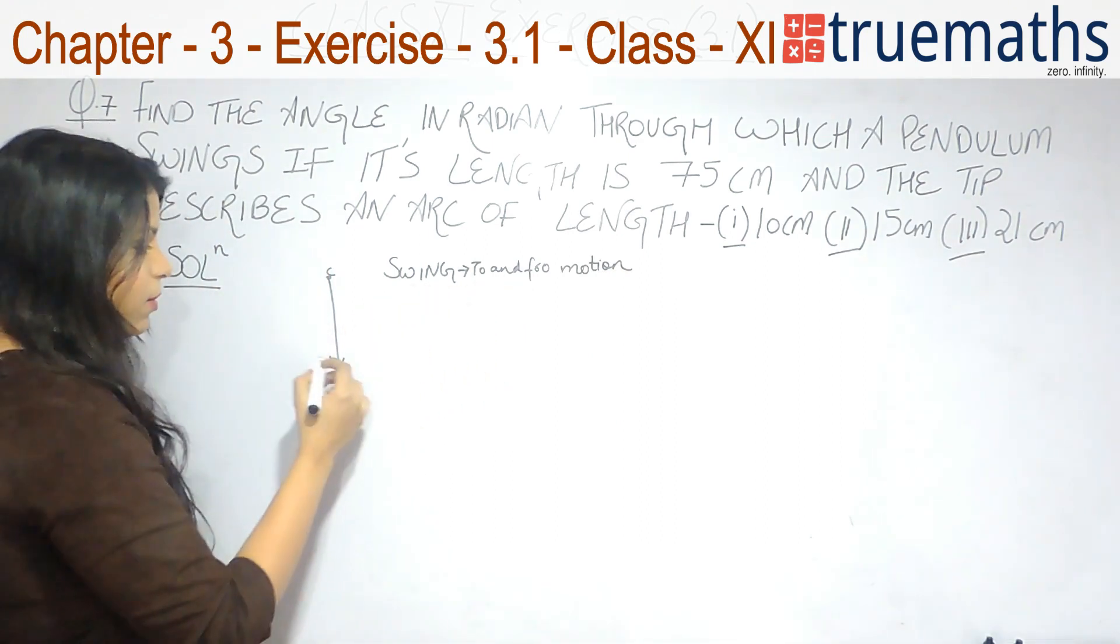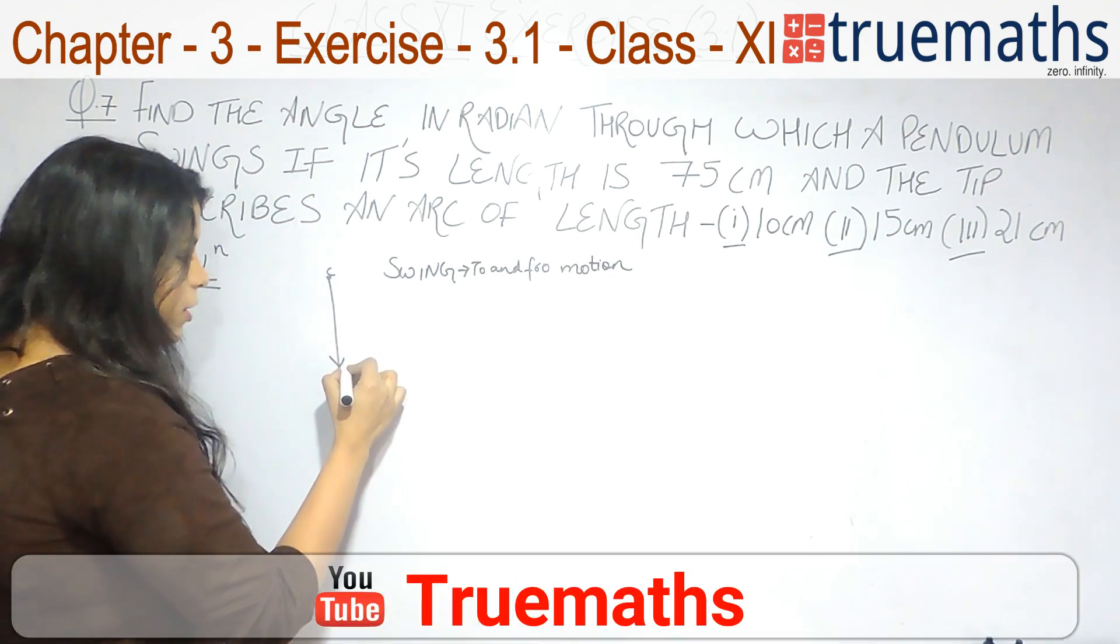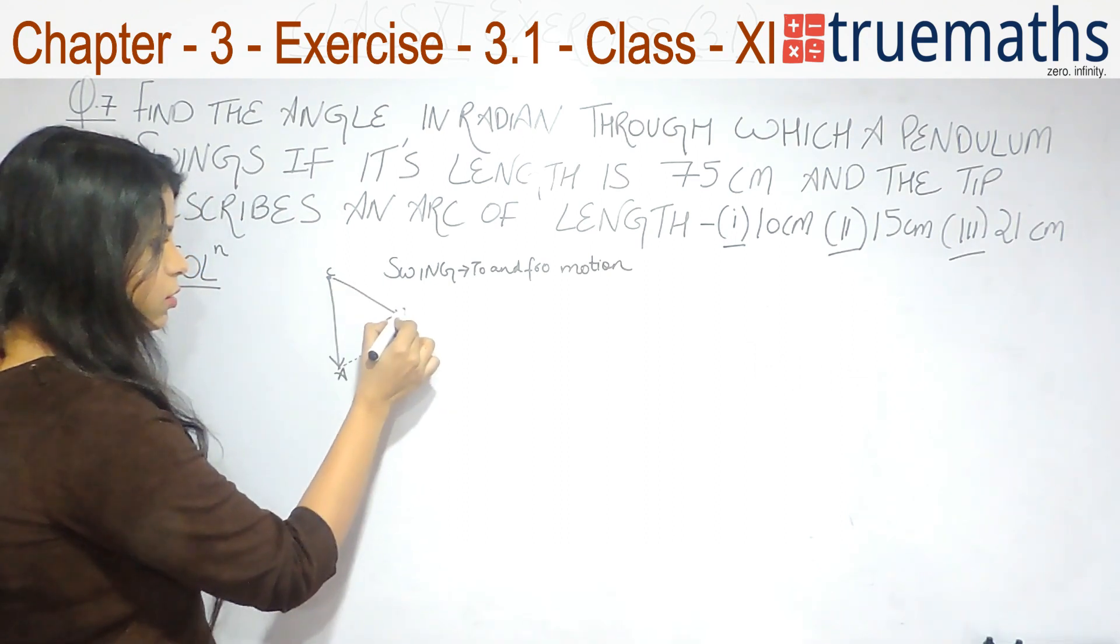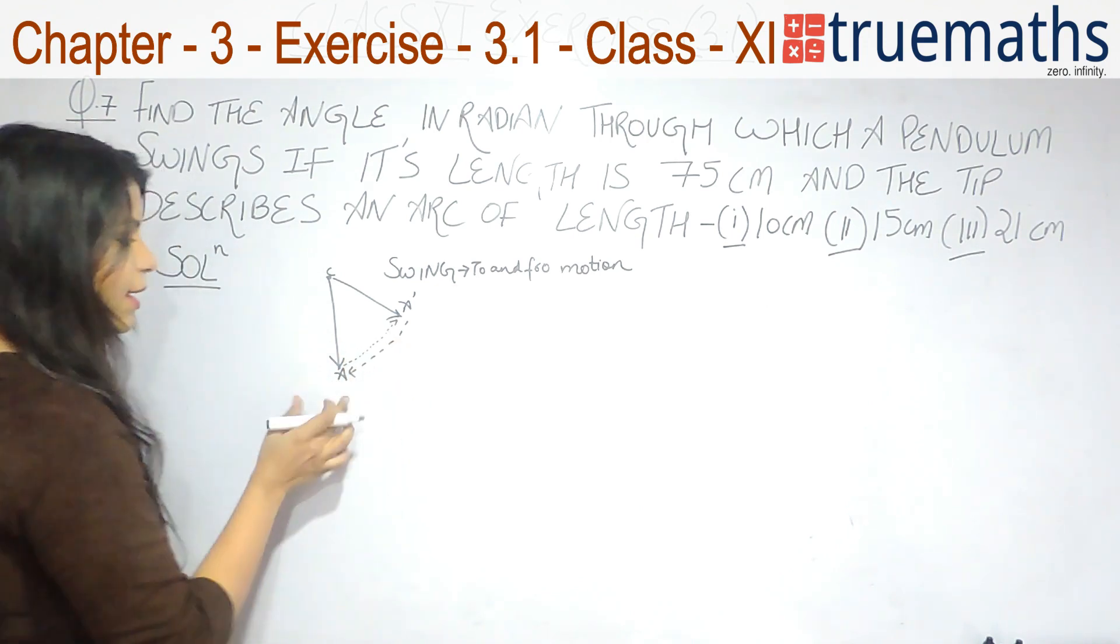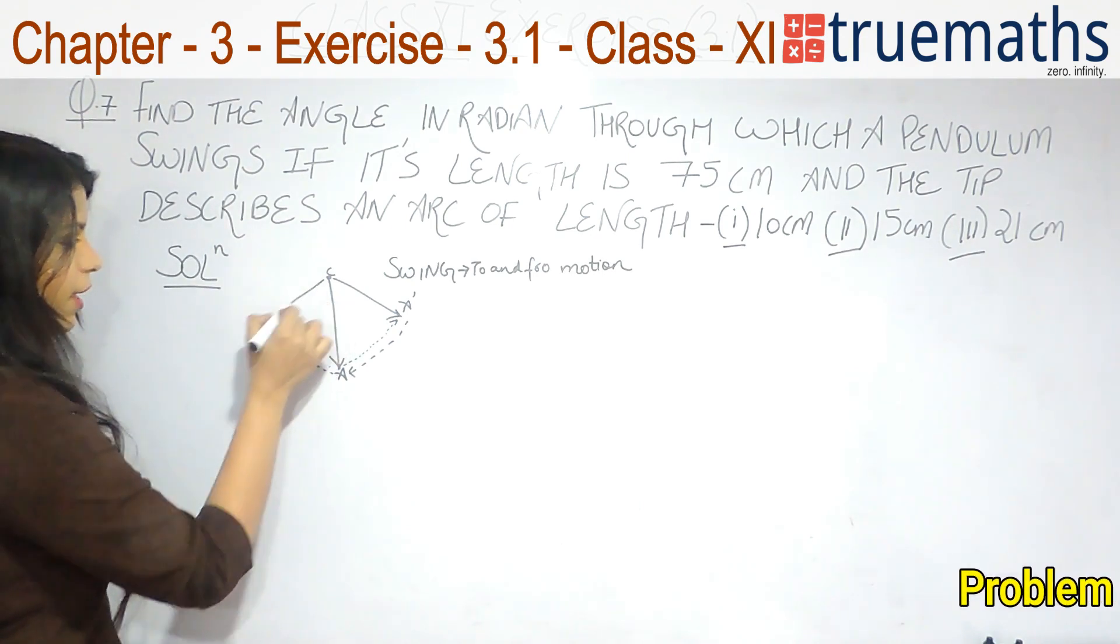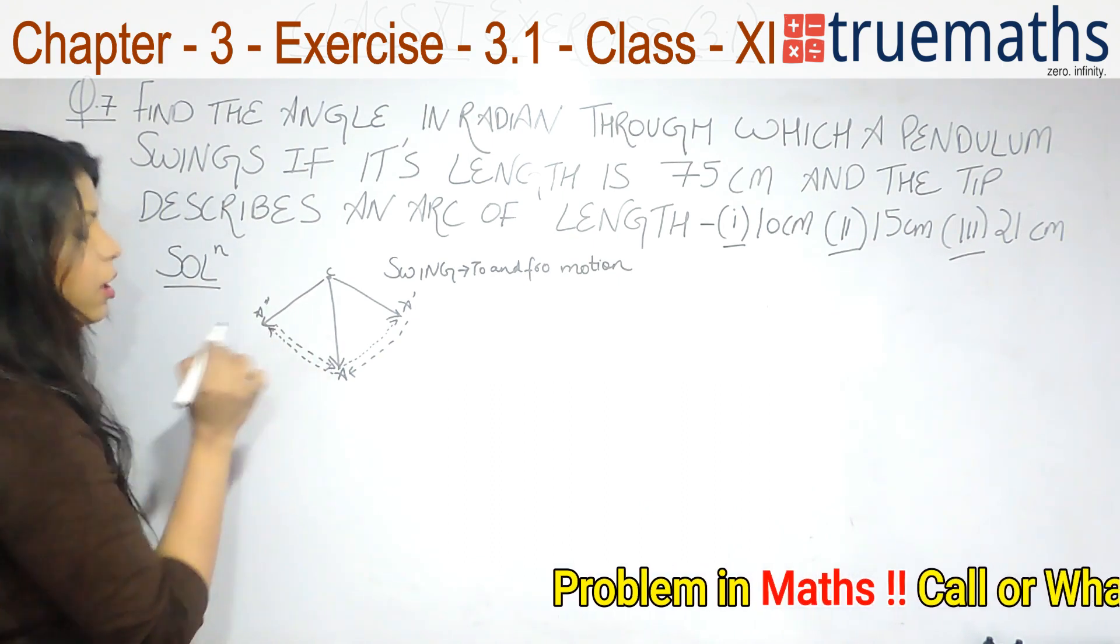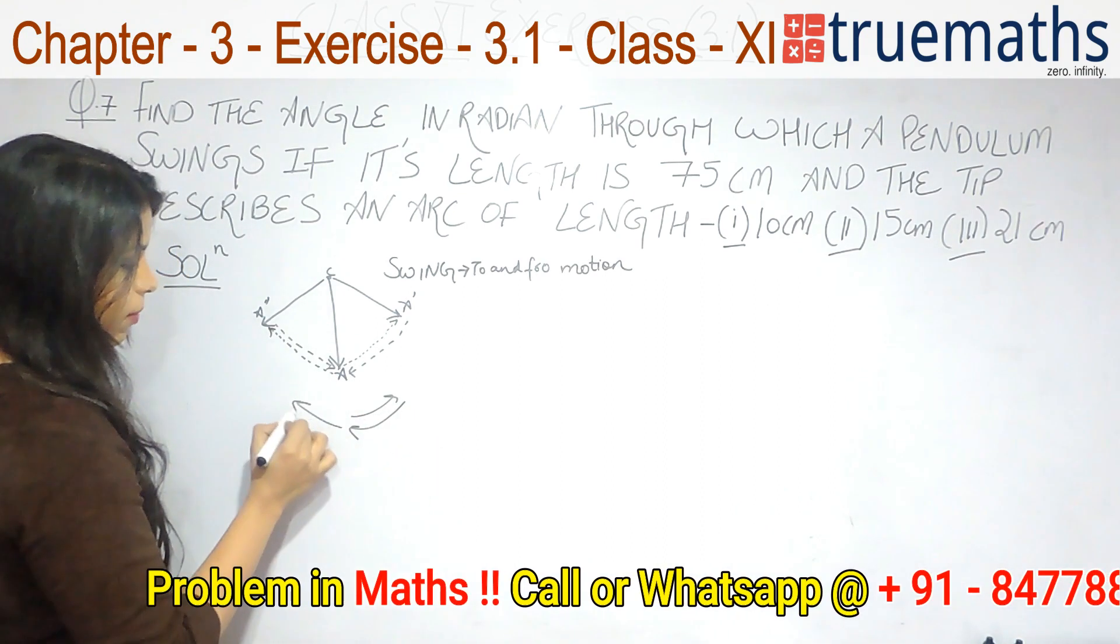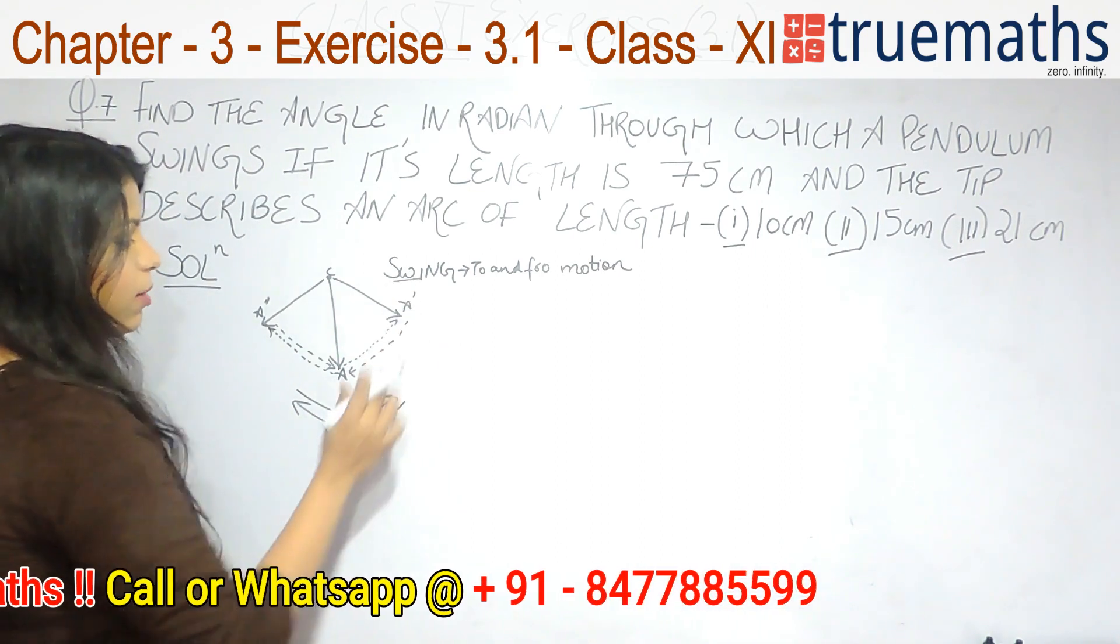What does that mean? That means that if the initial position of the pendulum is this A, the pendulum moves suppose to A', it comes back to its initial position, and then it traverses this path. From here it moves to suppose A' and then again it comes back to its original position. So this complete motion of the pendulum is called the to and fro motion.